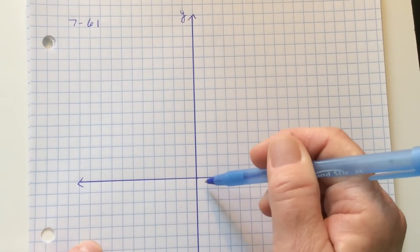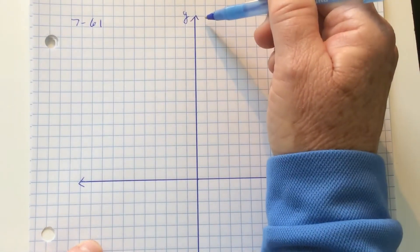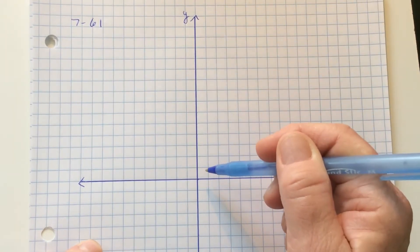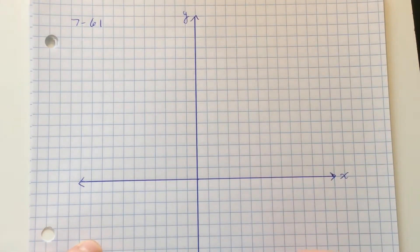So I noticed that the y values go up to 13.5 and down to negative 9, so I made sure that my graph would accommodate that.